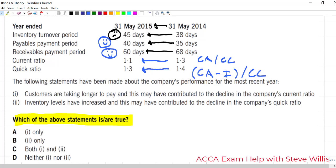Now, let's look at the statement. Customers are taking longer to pay. Nope, not true. Customers are paying us faster. So, this may have contributed to the decline in the company's current ratio. No way.